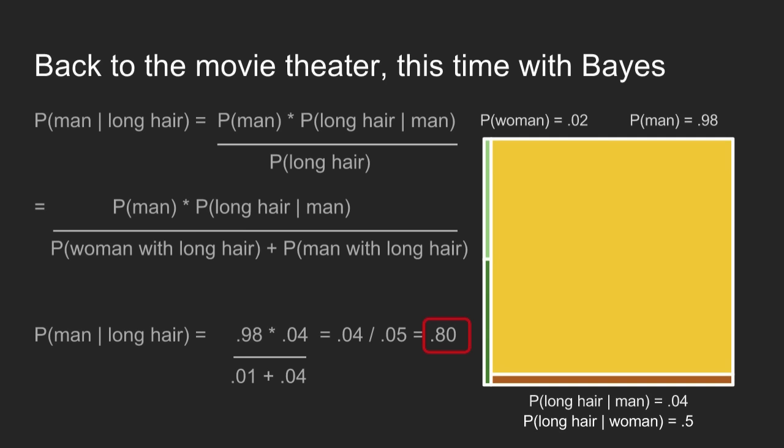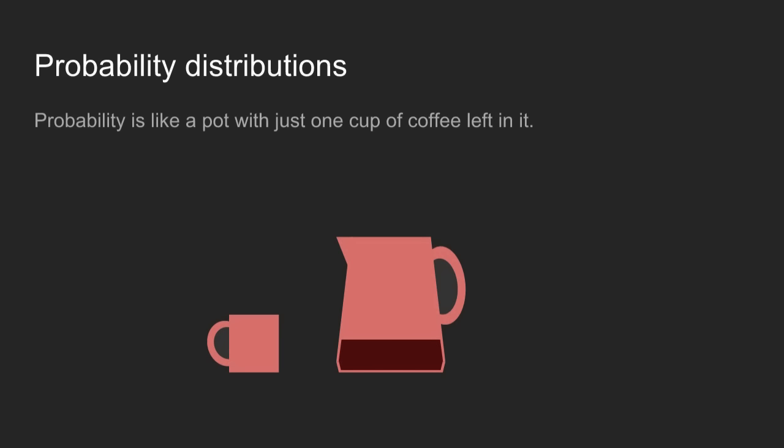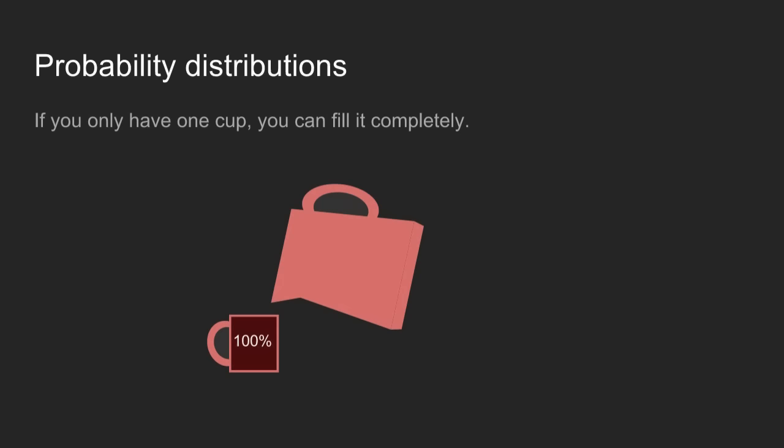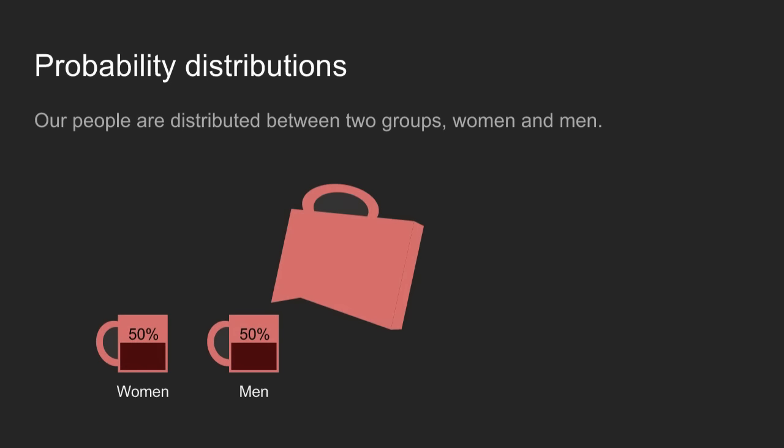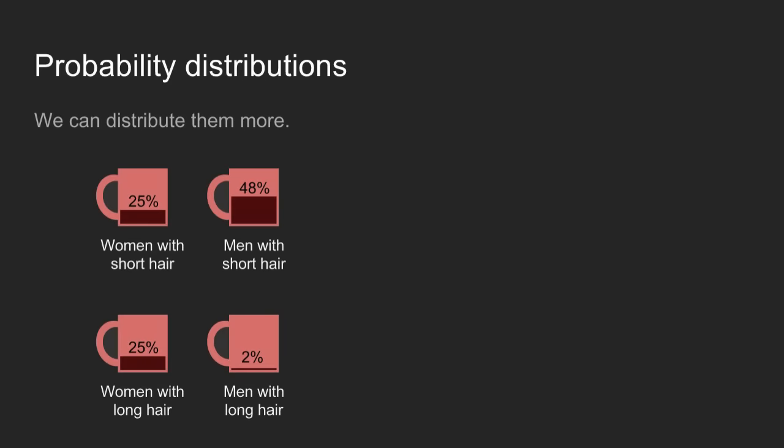This example shows the mechanics of how Bayes' theorem works. In practice, it's usually used a little differently. To show this, we'll take a detour and talk about probability distributions. You can think of probability like a pot with one cup of coffee — you can fill that cup all the way to the top. But if you have more than one cup, you have to share it around in any proportion you want. You can see this is just another representation of the distribution we were looking at before.